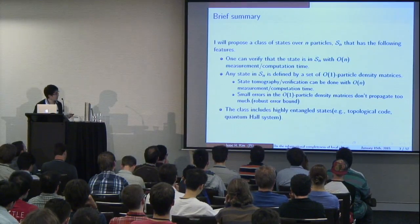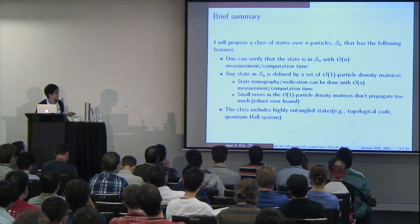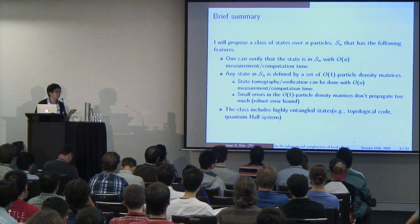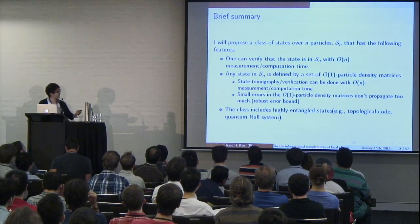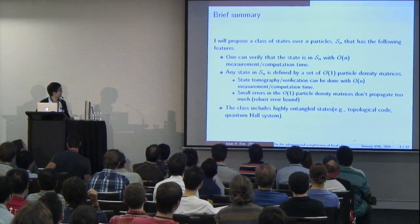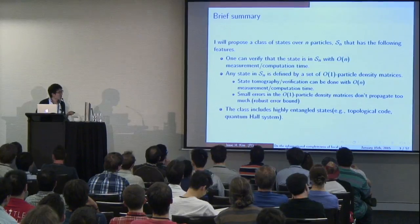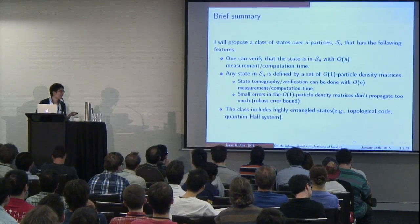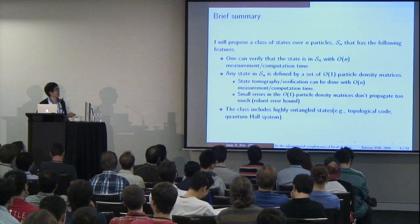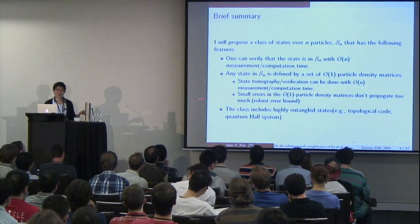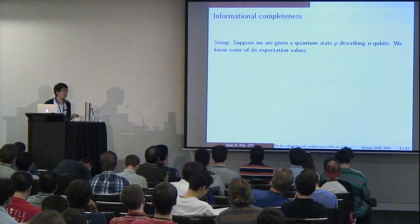And for the experts — or physicists — interested in quantum many-body systems of certain types, this class actually includes highly entangled states, such as topological codes or quantum Hall systems. So it will be useful.